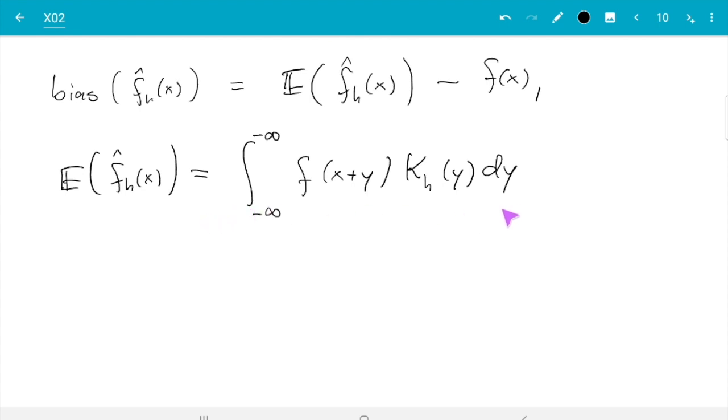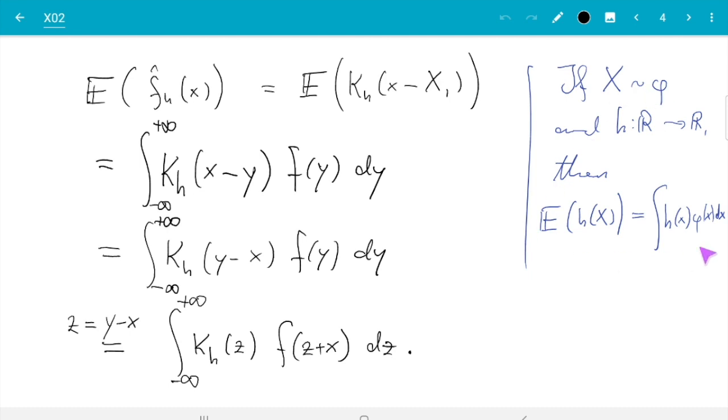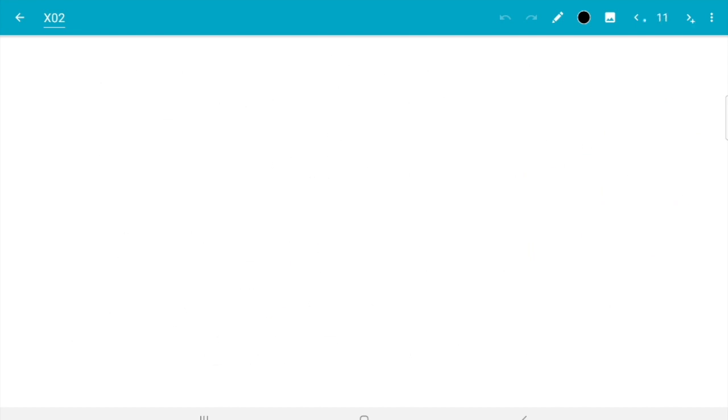Now this is an integral which has a k_h of y here and as we have just seen k_h of y is a density of a random variable. So we can use this rule backwards. We have an integral of something times a density of random variable, so reading it backwards we get expectation of whatever function is here applied to a random variable with this density.